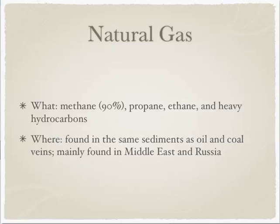Natural gas is our final conventional energy source for today. Natural gas includes methane, propane, ethane, and heavy hydrocarbons. Methane is the most common and is actually the product of broken-down coal, so we find it in coal veins where we may not be able to dig for coal. We can also find natural gases in the same sediments as oil. Our main resources for natural gases are in the Middle East and Russia. Part 2 of the notes will discuss nuclear technologies for energy along with other conventional energy resources.